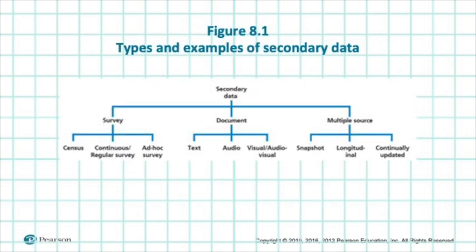As mentioned previously, here is figure 8.1. From this figure, we can see that secondary data can be divided into survey, document and multiple source. Please have a look at the figure. For survey, we can see that it is divided further into three groups: census, continuous, regular survey or ad hoc survey. All of these include surveys that have been conducted by previous researchers, usually using questionnaires.